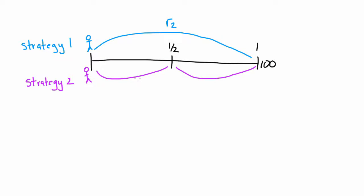Now, let's also assume that under strategy two, we will receive R1 today — some interest rate today — but we don't know what this interest rate will be. We don't know what the six-month interest rate will be in six months from now. So we can actually figure that out under expectations theory. Remember that these two investment strategies have identical levels of risk and identical payoffs, which means they'll have identical returns. So the total return from strategy one is (1 + R2) squared, because we're receiving R2 for that six-month period and R2 for that six-month period.